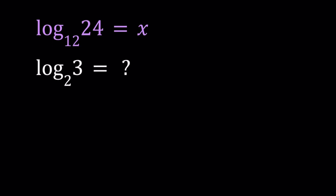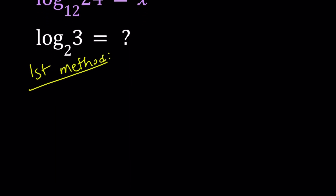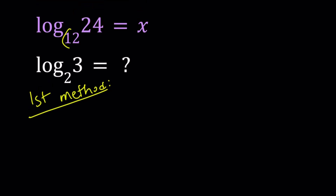Alright, I'll be presenting three methods. Let's start with the first method. For the first method, I'm going to use the definition of logarithms. Since we have the base as 12 and the result is x, we can safely say that 12 to the power x equals 24.